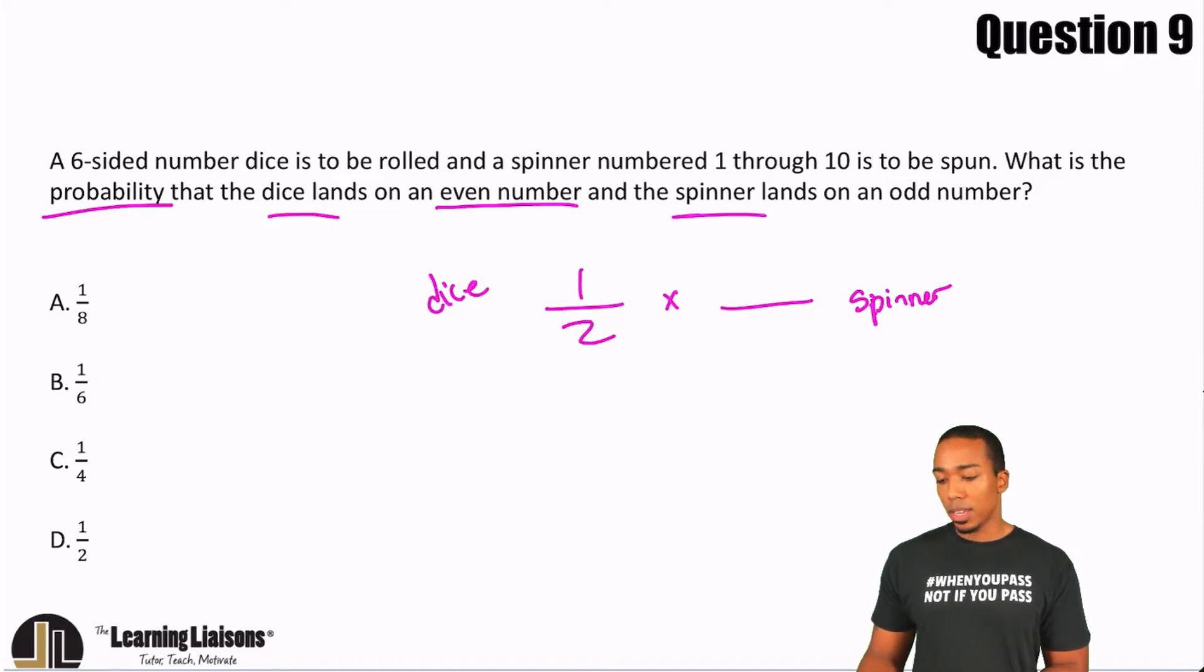And now, spinner landing on an odd, same deal. 1 through 10, you have 10 numbers. Every other number is going to be odd. Every other is also even. So that's 5 and 5. 5 even, 5 odd. So 5 odds out of 10 total numbers, we'll want to half again. Just using some logic here, that way we can save some time. So that's going to be half again.